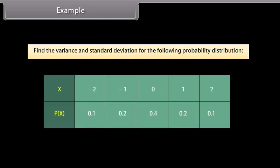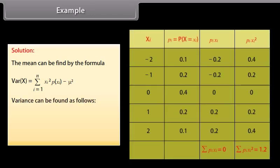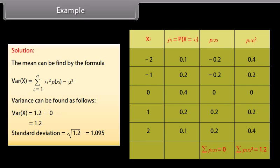Example: Find the variance and standard deviation for the following probability distribution. Solution: Variance = Σ Xi² · P(Xi) − μ² = 1.2. Standard deviation = √1.2 = 1.095.